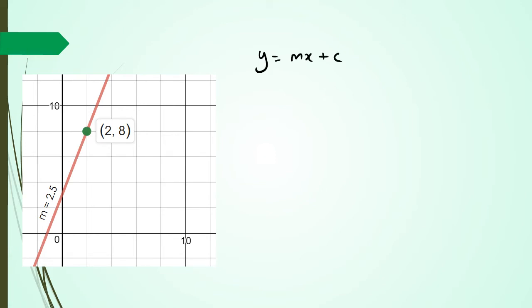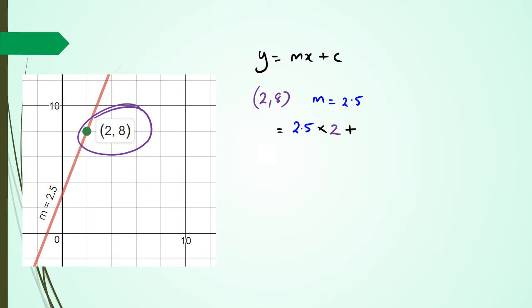In this situation you've been given a gradient and a point, and you're asked to find the equation of the line. We know y equals mx plus c, and the point we're going to use is (8, 2) — wait, the y value is supposed to be 8 and x is 2. The gradient is 2.5, so substituting: 8 equals 2.5 times 2 plus c, giving 8 equals 5 plus c, therefore c equals 3. So the equation for this line is y equals 2.5x plus 3.